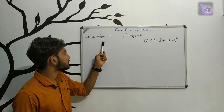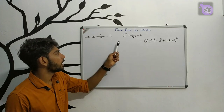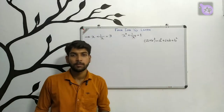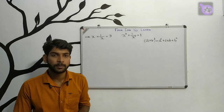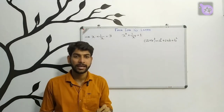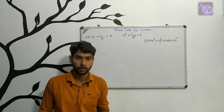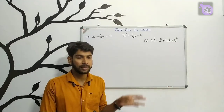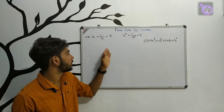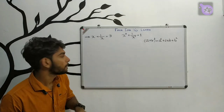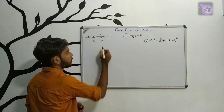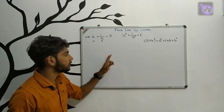Given x plus 1 by x equals 3, we need to find x squared plus 1 by x squared. We will use the formula: a plus b the whole square equals a squared plus 2ab plus b squared. Here, x will be a, and 1 by x will be b. Let's expand.